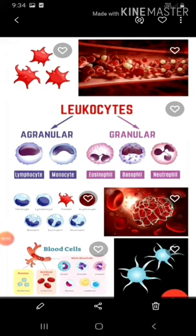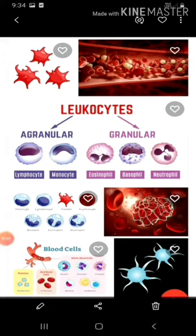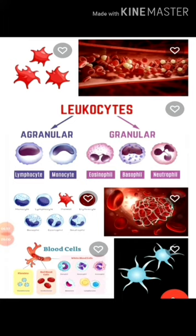Functions of blood — this is an important question. First, it transports respiratory gases, which are oxygen and carbon dioxide. Second, it transports digestive food materials to different body cells. Third, it transports hormones. Fourth, it transports nitrogenous excretory products like ammonia, urea, and uric acid. Fifth, it is involved in protection of the body and defense against disease. Sixth, it acts as a buffer and helps in regulation of pH and body temperature. Seventh, it maintains water balance in the body.